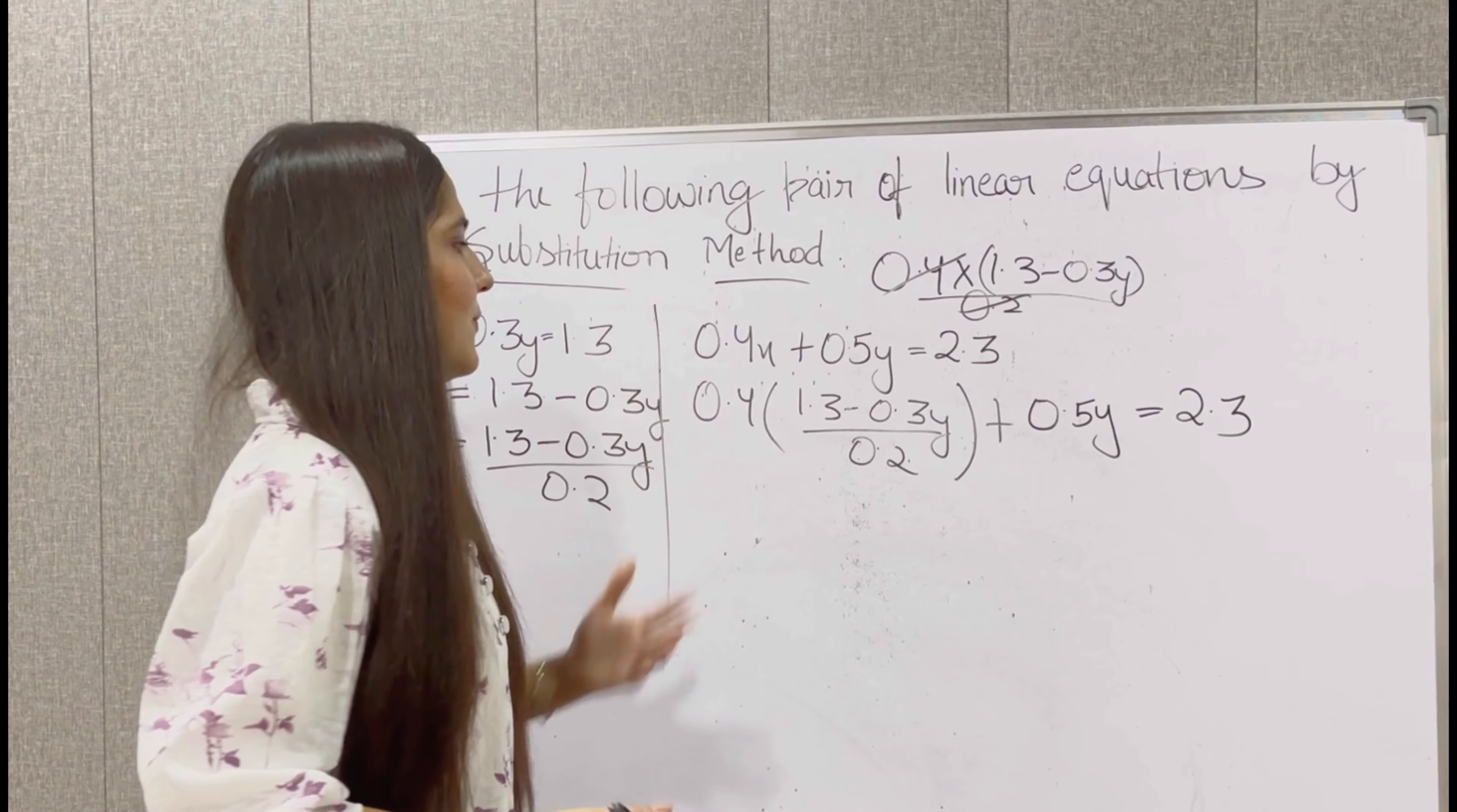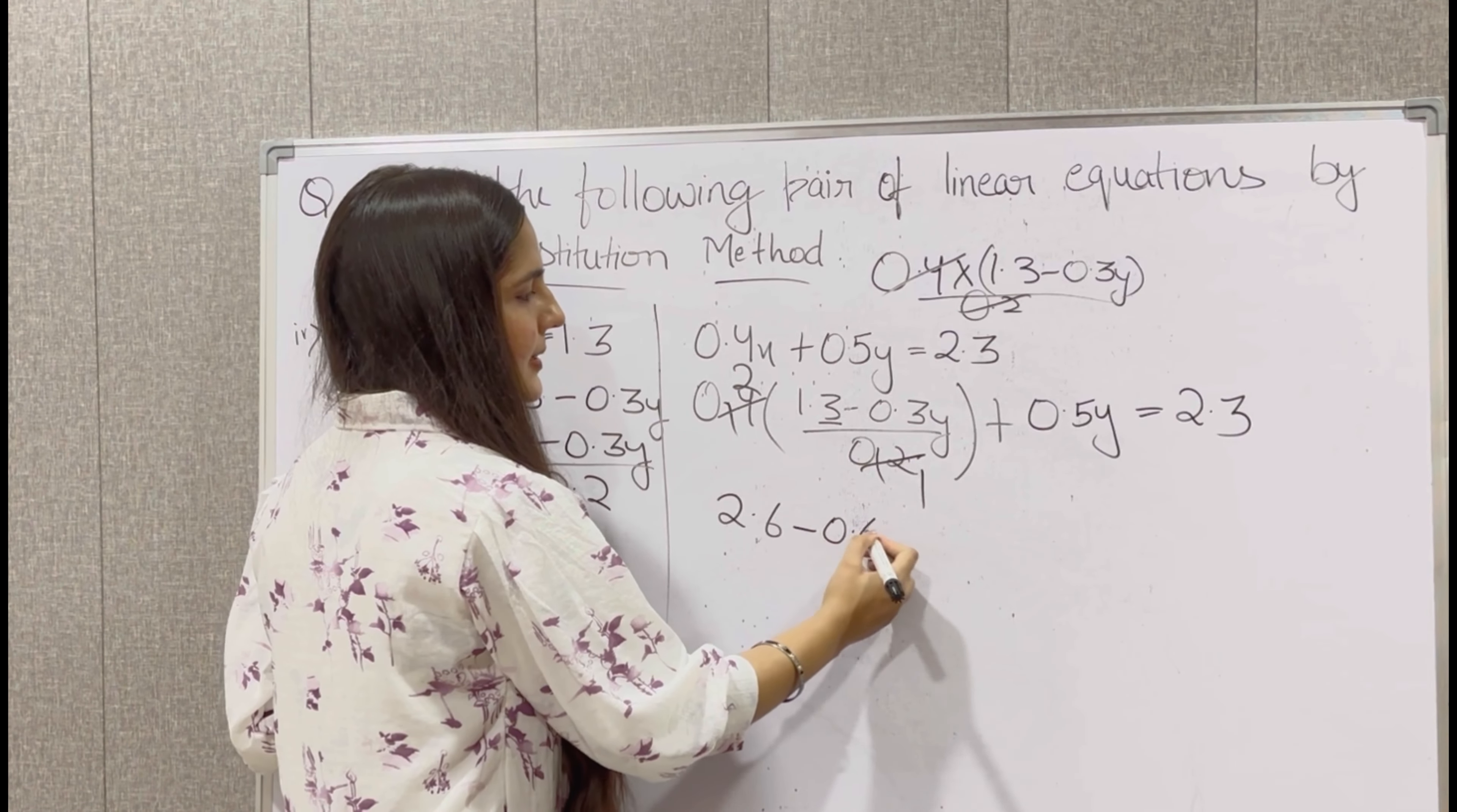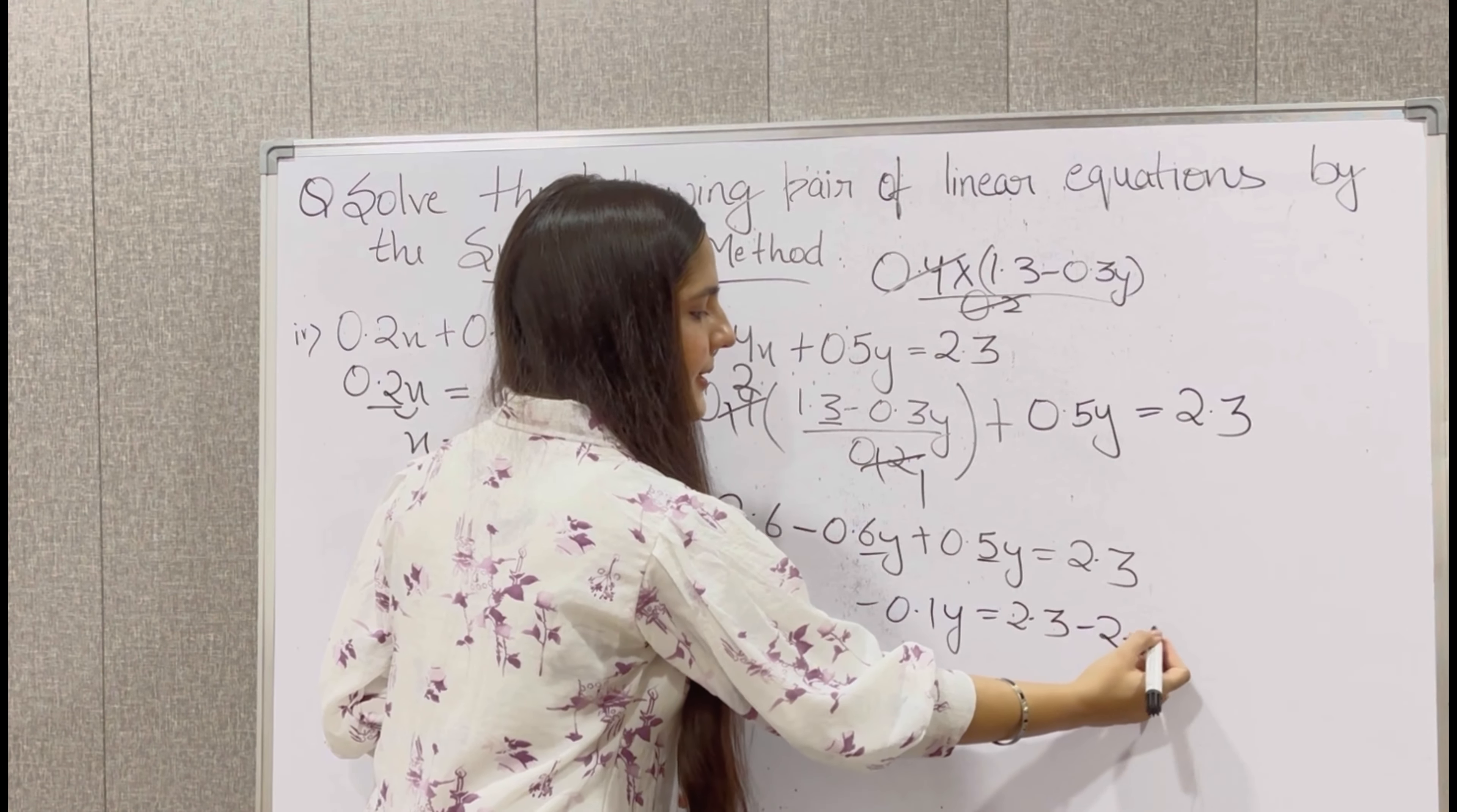Now this x, 0.4 into 1.3 minus 0.3y upon 0.2, plus 0.5y is equal to 2.3. Before solving the bracket, we can simplify. So 0.4 multiplied with 1.3 minus 0.3y upon 0.2. We can cut this, the decimal point cancels. 2 1s are 2. Now we need to multiply this bracket with 2. 1.3 multiplied with 2 gives us 2.6, minus 0.6y plus 0.5y is equal to 2.3.